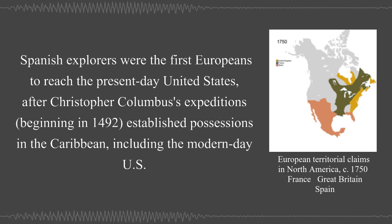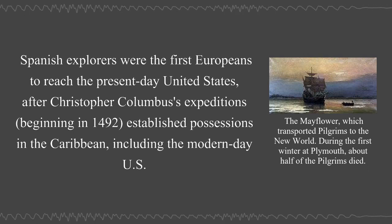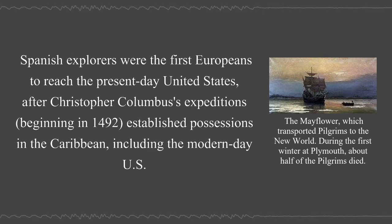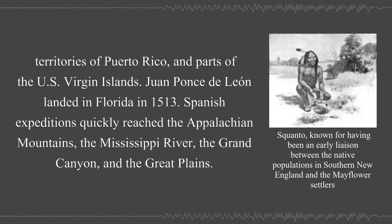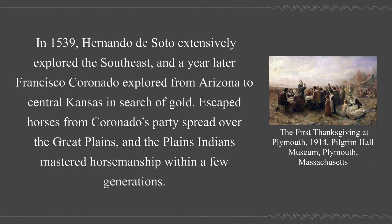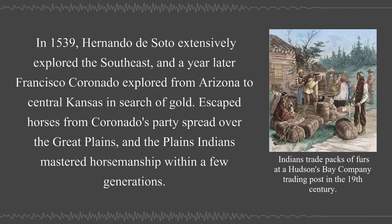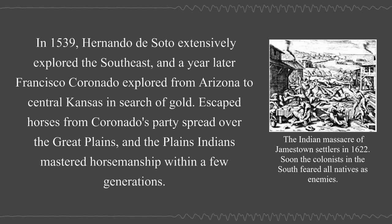Spanish explorers were the first Europeans to reach the present-day United States. After Christopher Columbus's expeditions beginning in 1492 established possessions in the Caribbean, including the modern-day U.S. territories of Puerto Rico and parts of the U.S. Virgin Islands, Juan Ponce de León landed in Florida in 1513. Spanish expeditions quickly reached the Appalachian Mountains, the Mississippi River, the Grand Canyon, and the Great Plains. In 1539, Hernando de Soto extensively explored the southeast, and a year later Francisco Coronado explored from Arizona to central Kansas in search of gold. Escaped horses from Coronado's party spread over the Great Plains, and the Plains Indians mastered horsemanship within a few generations.